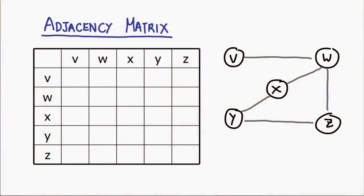Today we're going to look at three different ways of storing graphs. We're going to start with the adjacency matrix. Think of an adjacency matrix as a table. An adjacency matrix lists all the vertices, both in rows and columns of the table.